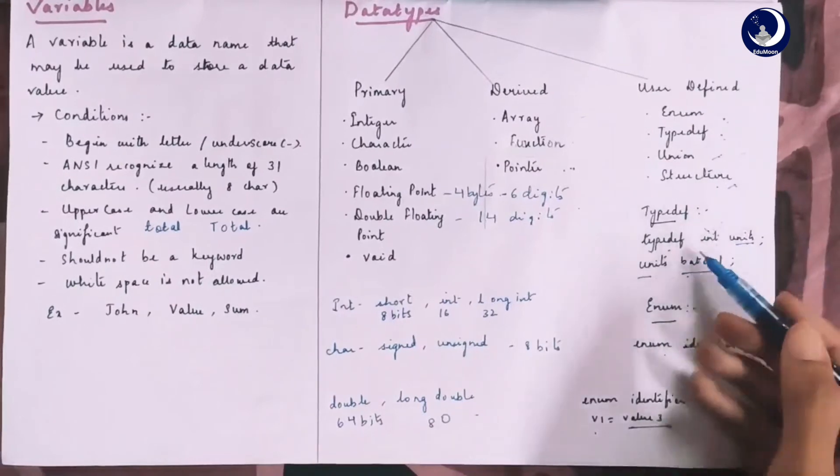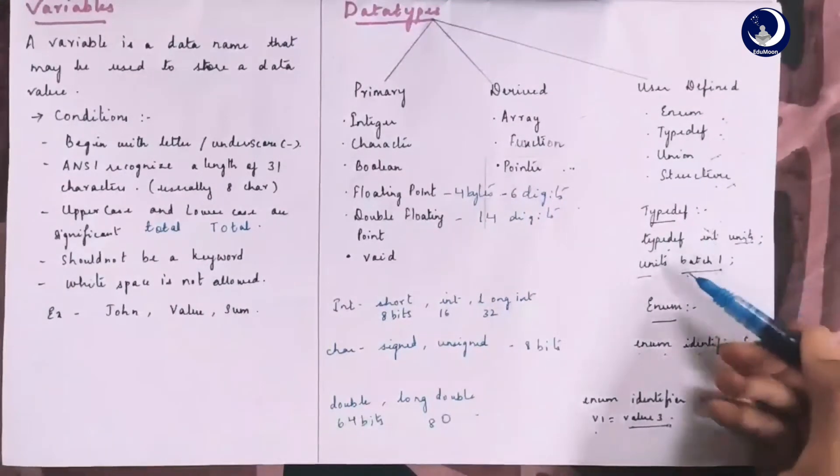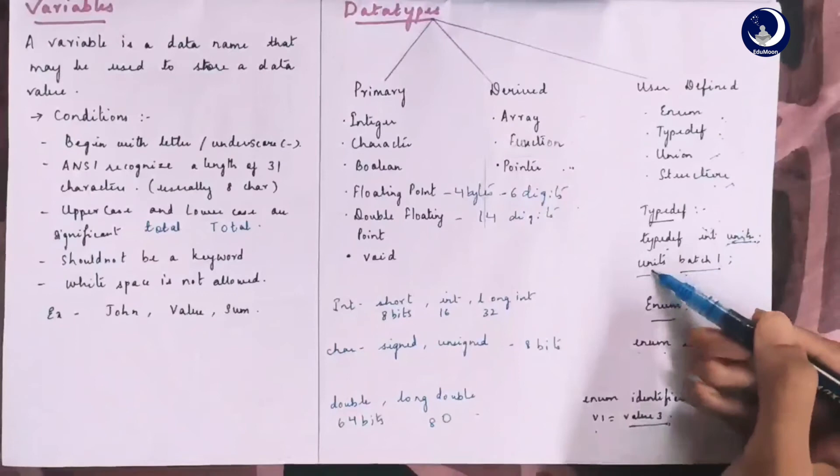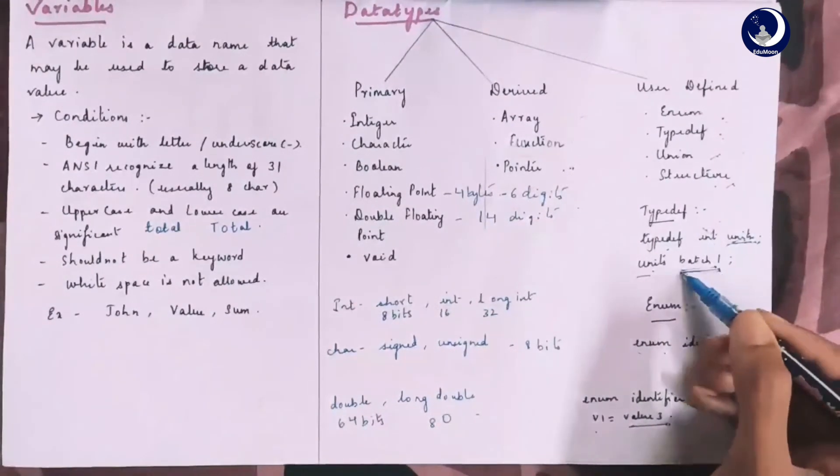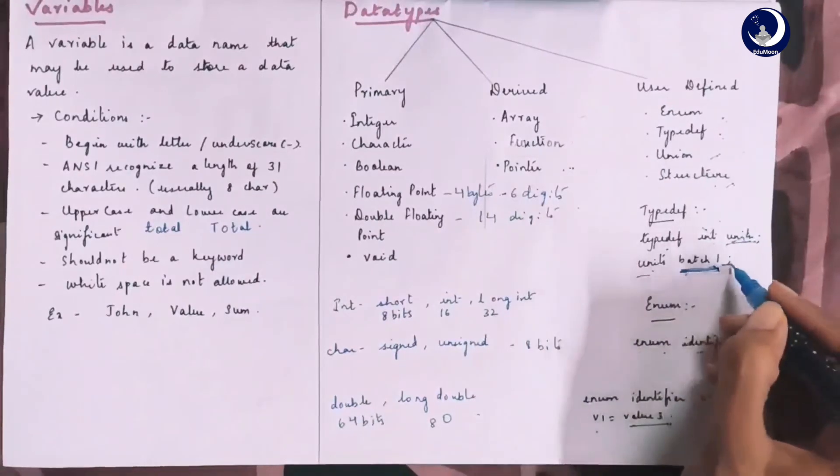Consider this example, typedef int and units. This unit is used to declare another variable batch1. What is the data type of batch1? It is nothing but integer.